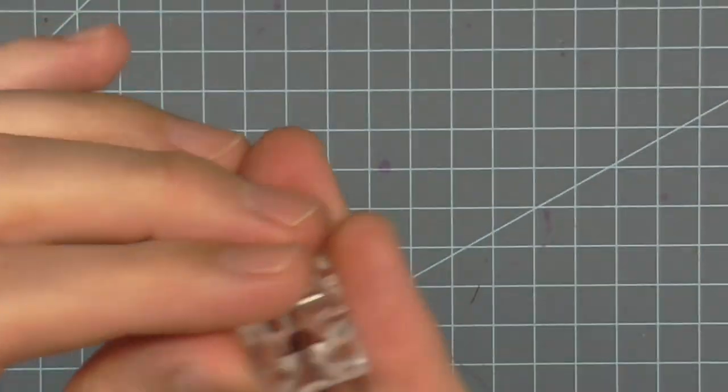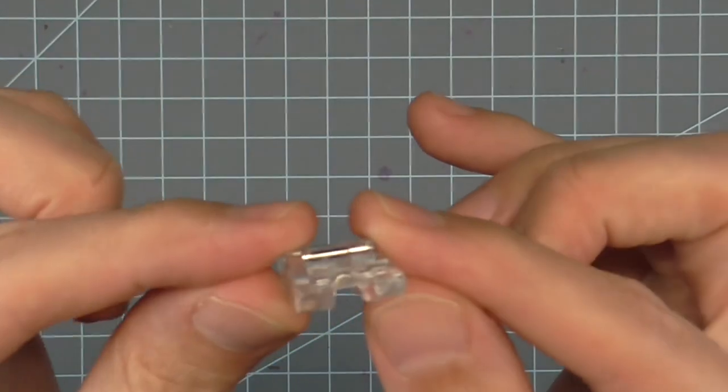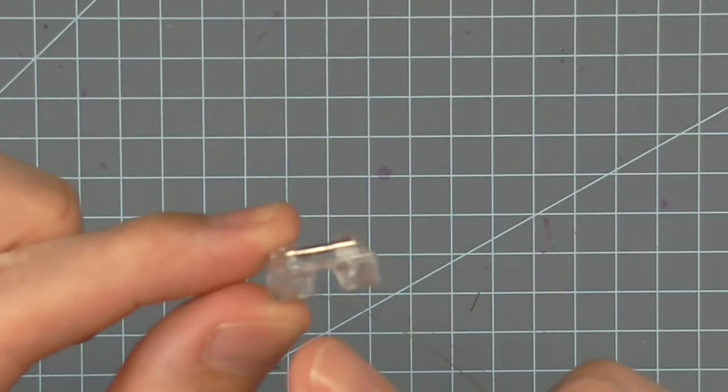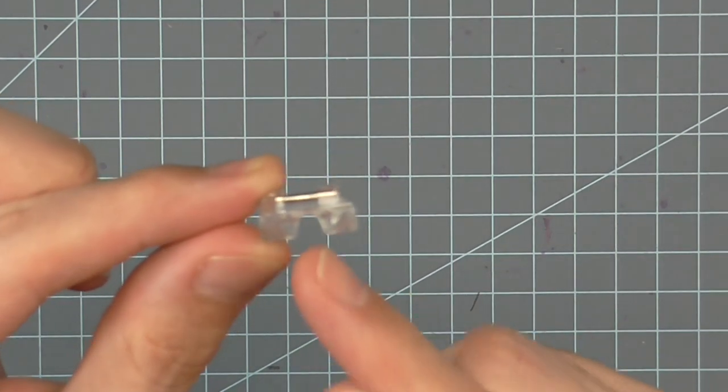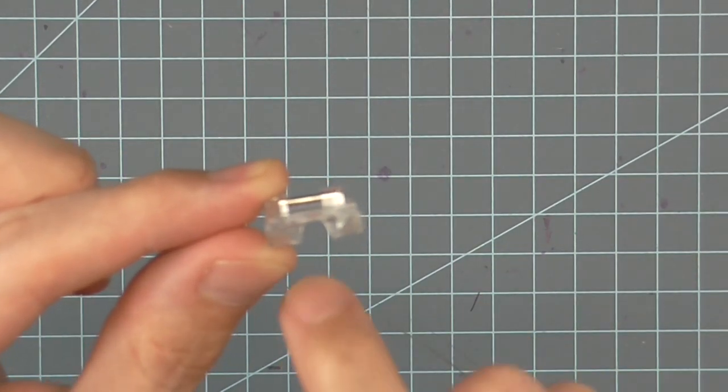For machine sewing wire to buckram, you will need a machine with a zigzag stitch and a cording foot. The cording foot has a channel in the middle that allows the wire to slide through it. Look for a foot with a wide channel so the wire doesn't catch on the foot as it sews.